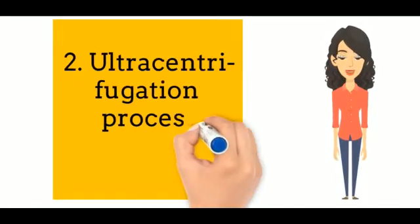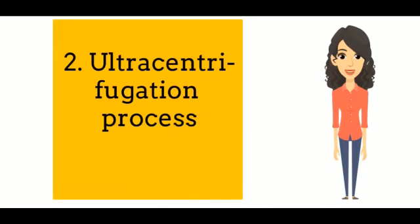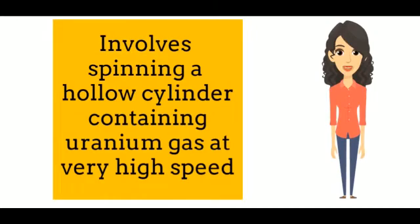The second method is ultracentrifugation process. This technique developed after Second World War involves spinning a hollow cylinder containing uranium gas at very high speed.